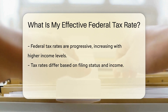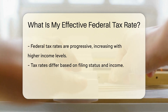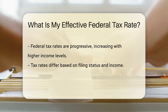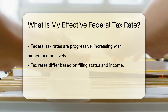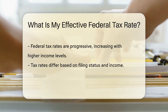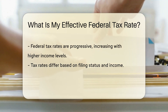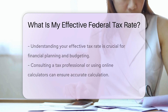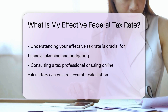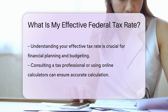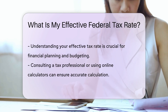The federal tax rate is progressive, meaning the more you earn, the higher percentage you pay in taxes. Tax rates can vary based on your filing status and income level. Understanding your effective federal tax rate helps you plan your finances and budget accordingly.